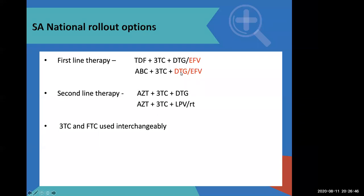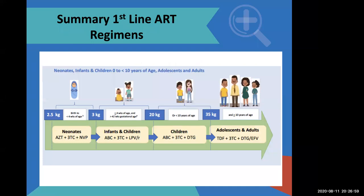For second line — for those who fail first line — you can see it's two nucleosides and either DTG or lopinavir/ritonavir. As people grow into adults, their regimen needs change. As soon as someone crosses a weight of 35 kgs, they qualify for tenofovir. If the weight is less than 35 kgs, you cannot use tenofovir. Therefore, you use abacavir, lamivudine, and dolutegravir.